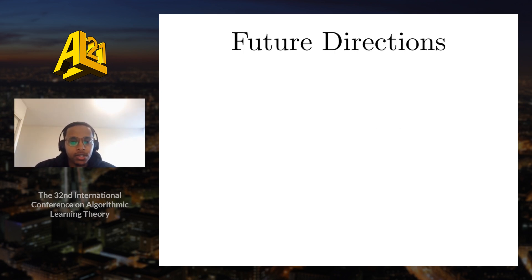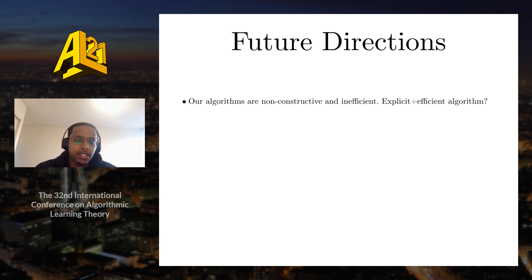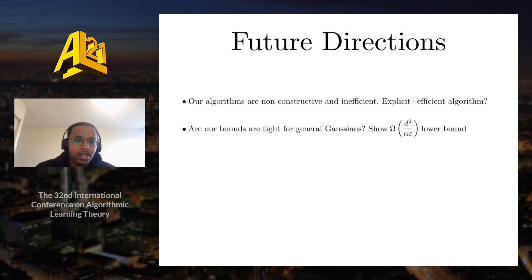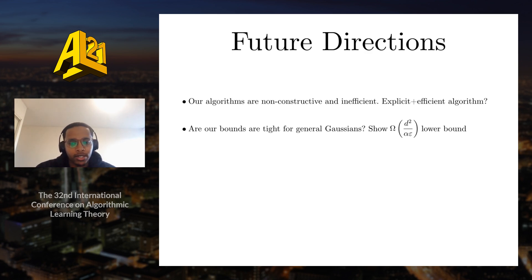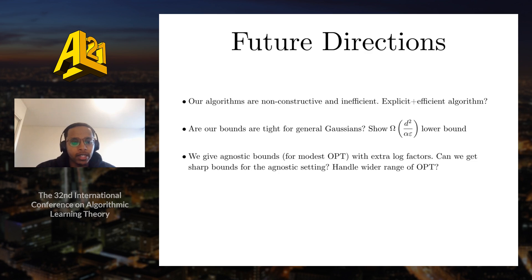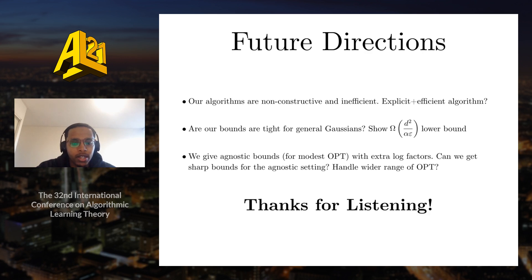To conclude, some future directions: our algorithms are non-constructive and inefficient, so it would be nice to have explicit and efficient algorithms for this problem. Our bounds for general Gaussians are tight in two out of three terms, and it would be nice to show a lower bound for the last term. In our paper we have agnostic bounds for modest levels of OPT that have extra log factors, so it would be nice to shave those log factors and handle a wider range of values of OPT. Thanks for listening.